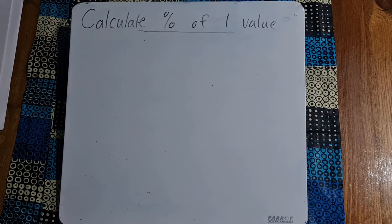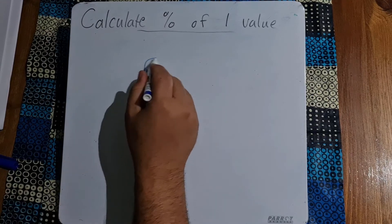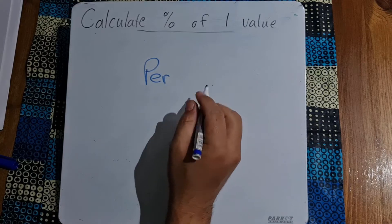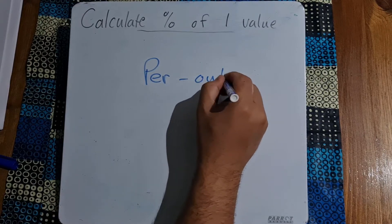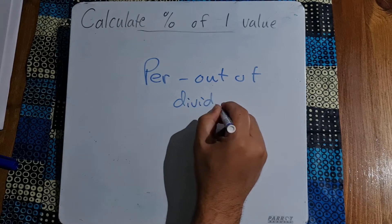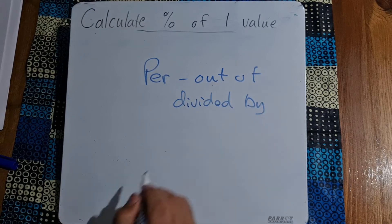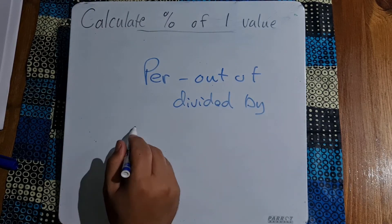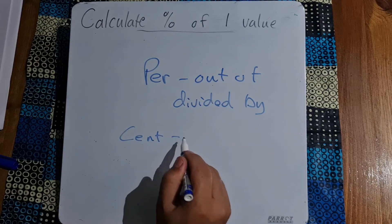First of all, did you know that the word percent comes from two words? The first one is per and that means out of or divided by, and then cent. Well we can begin to think about that.